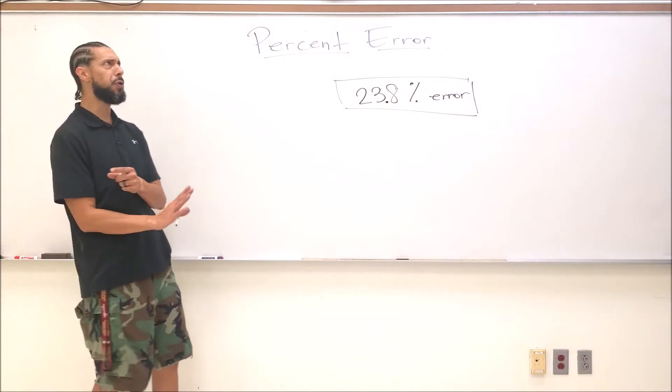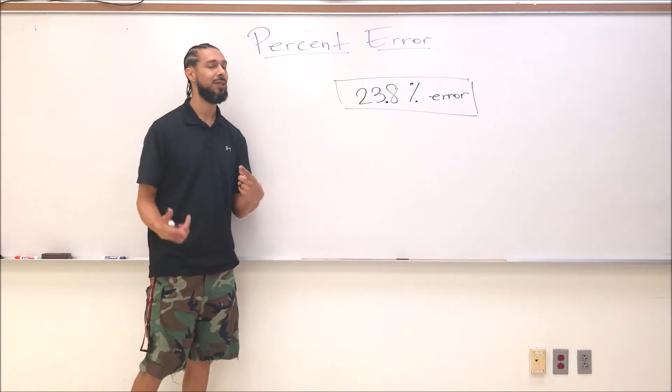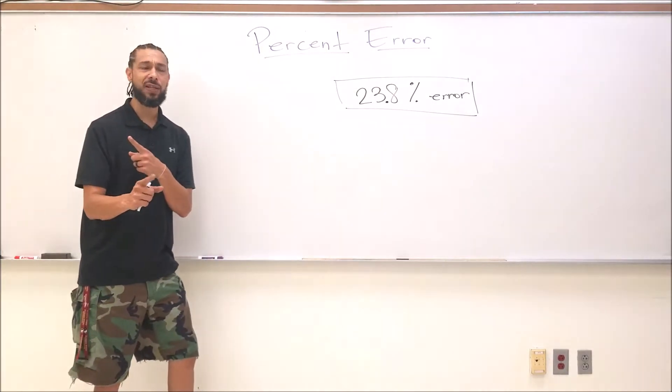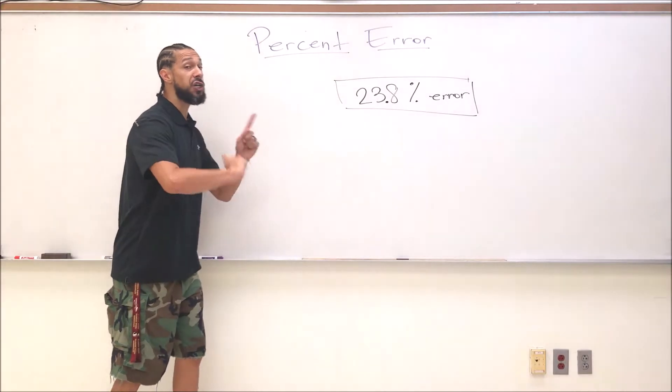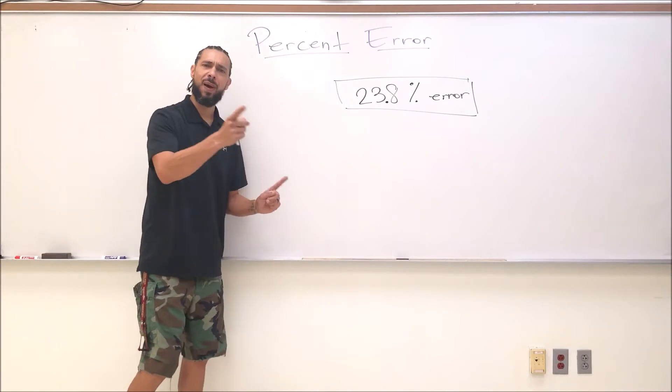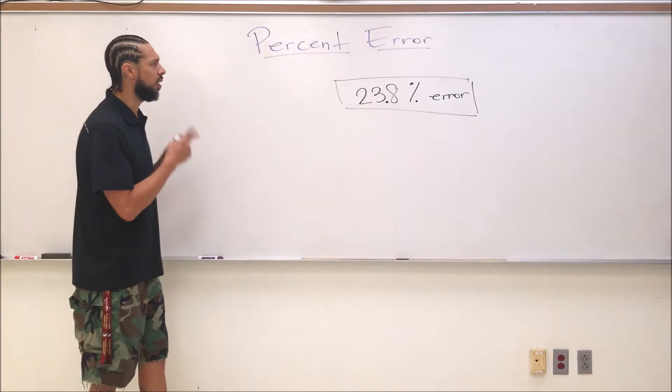Now to get a percent error, times by 100. I was off by 23.8%. Huge error. 20 percent error is pretty big. Now let's talk about if I overestimated her age by the same amount.